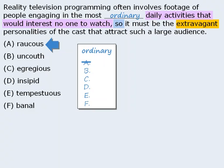Answer choices B, C, and E all suffer from the same problem of meaning the opposite of what we need. 'Uncouth' means ill-mannered. 'Egregious' means really bad. And 'tempestuous' means wild. So we can eliminate all of these.